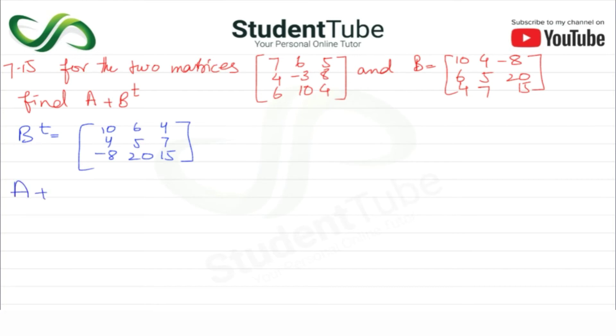Now we need to add A plus B transpose. A plus B transpose is equal to matrix A, which is [7, 6, 5, 4, -3, 8, 6, 10, 4], plus B transpose, which is [10, 6, 4, 4, 5, 7, -8, 20, 15].